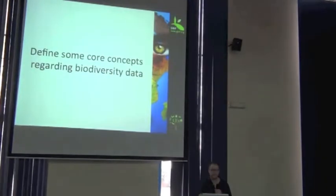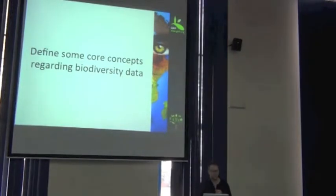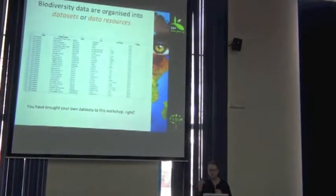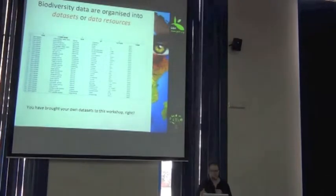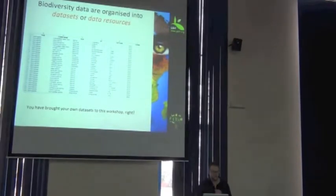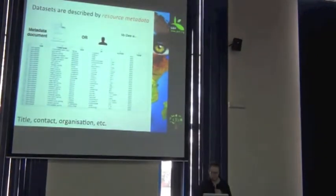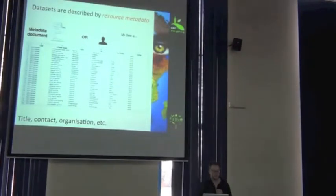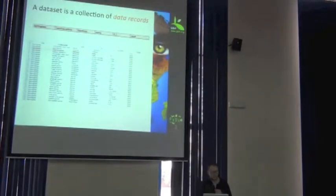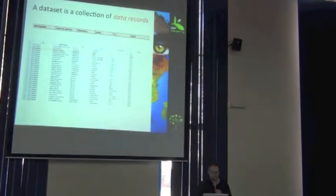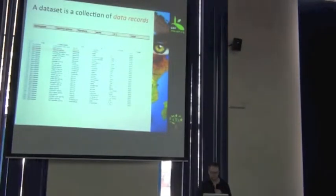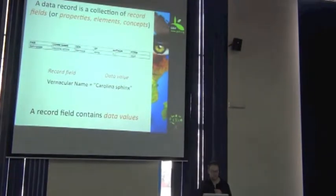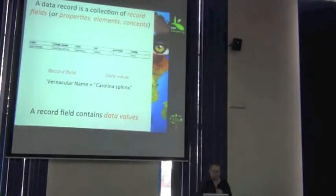Now, the next part of the introduction is just to familiarize you with a lot of the concepts and vocabulary. Dataset, or data resource — same thing. It's what we've been loading into the online tool, what we've had inside our spreadsheet templates, what you yourselves have brought with you in your Excel file. It's a collection of your records. You need to describe what your dataset is all about — we do that with resource metadata. A dataset is composed of data records, just like your rows in the spreadsheet. And a record is a collection of record fields — we can also call them properties, elements, or concepts. They're effectively the names of your columns.